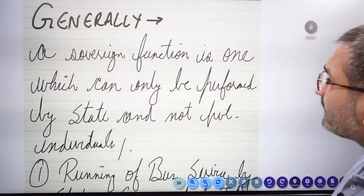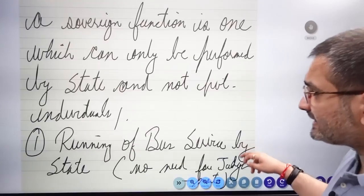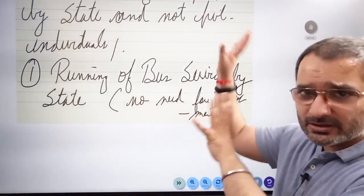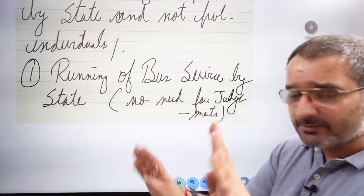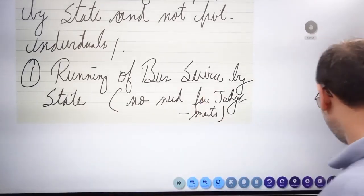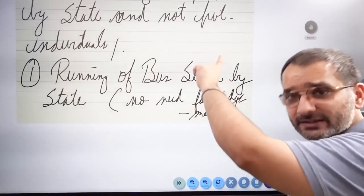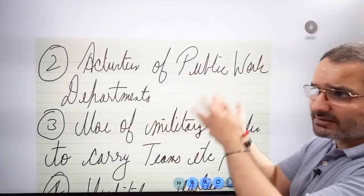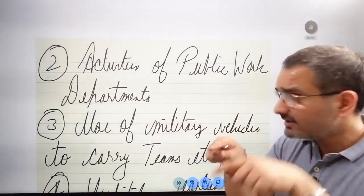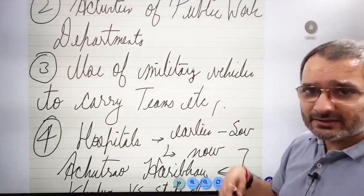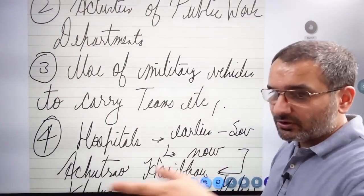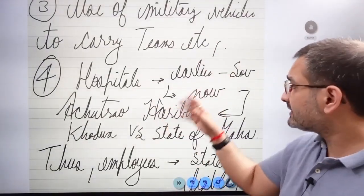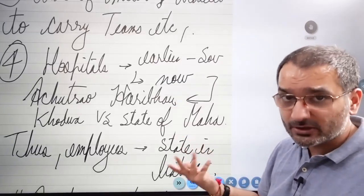Now it's time to close up the answer. The Law Commission first report recommended to enact a law but nothing till date. Generally now you will close off your answer with this: a sovereign function is one which can only be performed by the state and not private individuals. Running of bus service by state has been classified as non-sovereign function, so the state will be held liable. Activities of public works departments, non-sovereign functions because they can be done by independent contractors. Use of military vehicles to carry teams - if an air force bus carries a basketball team and gets into an accident, the state will be held liable.